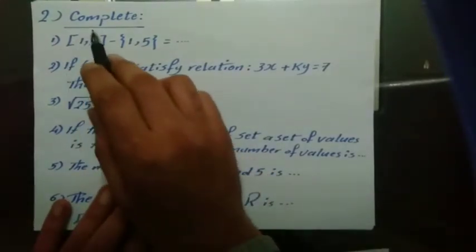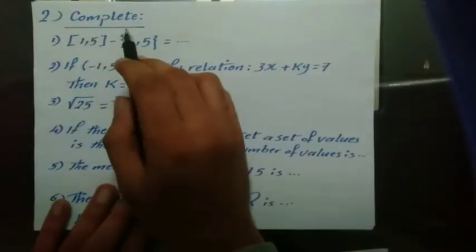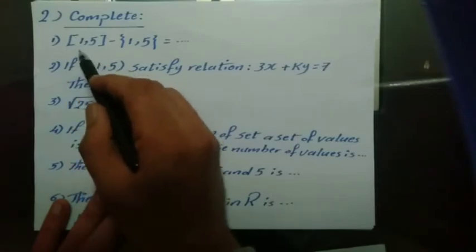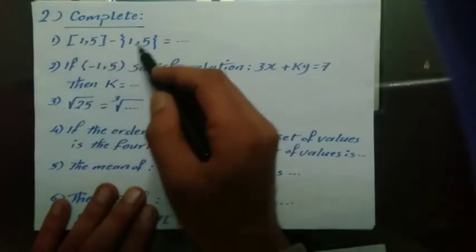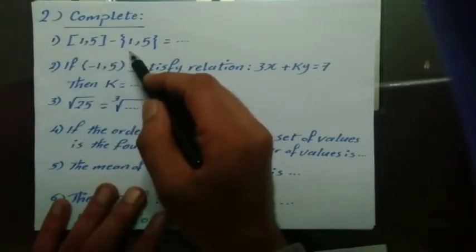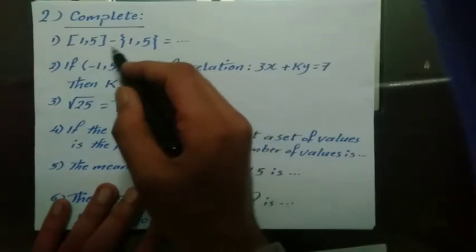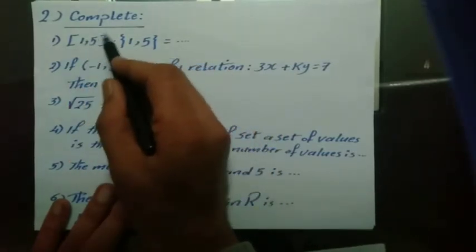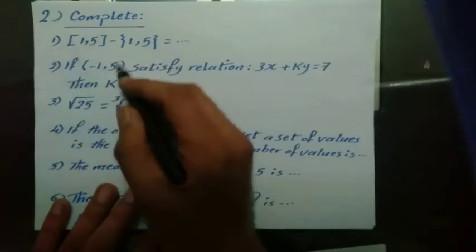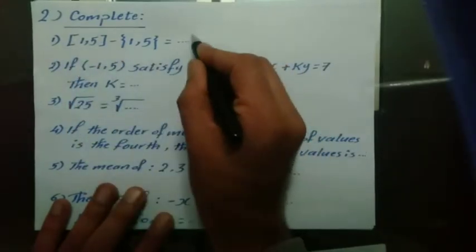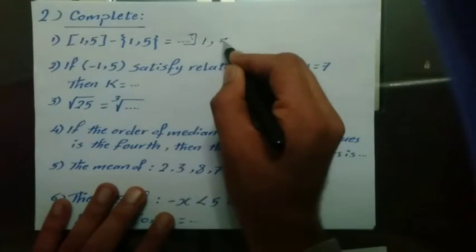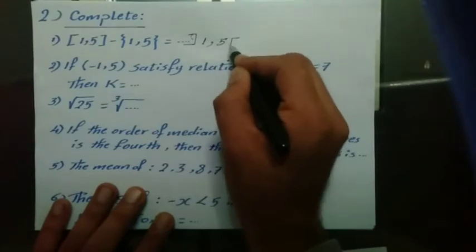Complete question: The closed interval [1, 5] minus the set {1, 5} means removing 1 and 5 from the interval. The interval becomes open at both ends, written as the open interval (1, 5).